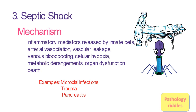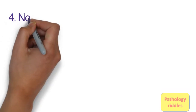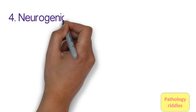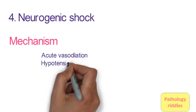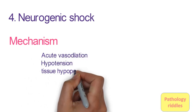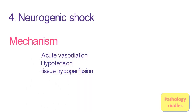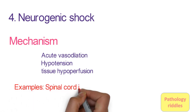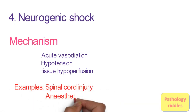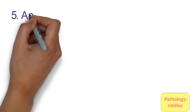The fourth type of shock is neurogenic shock. In neurogenic shock there is sudden vasodilation, and that leads to decreased blood pressure, hypotension, and finally tissue hypoperfusion. This happens in cases like spinal cord injury, anesthetic accidents, and so on.